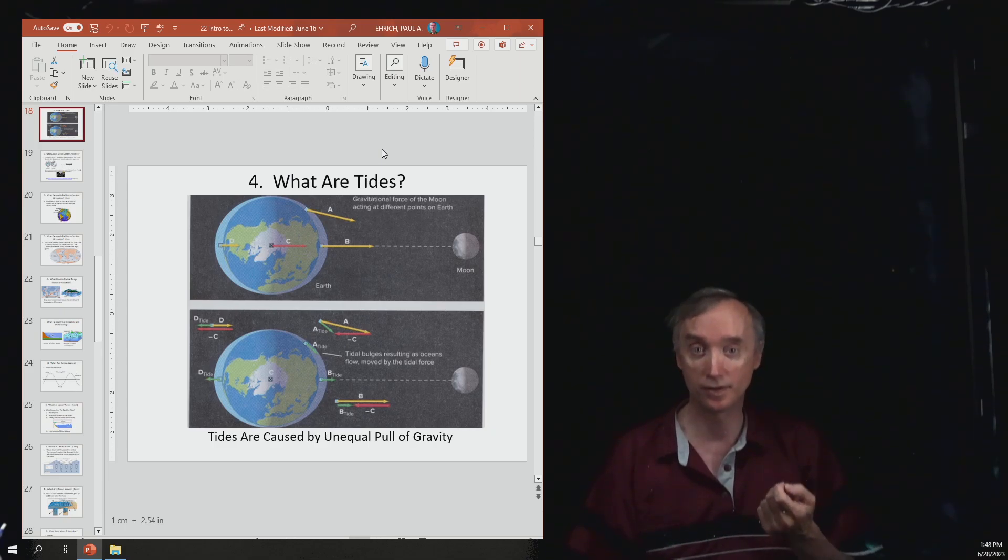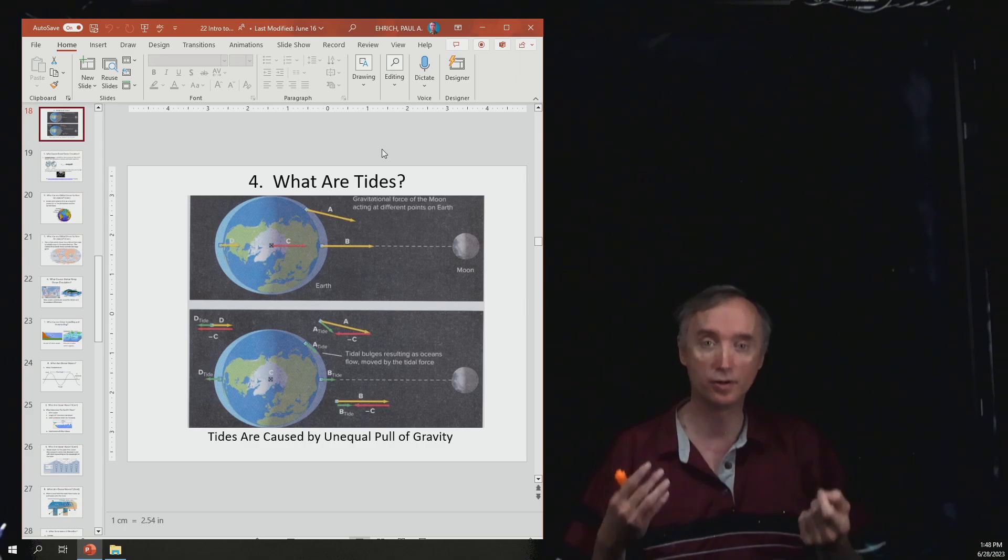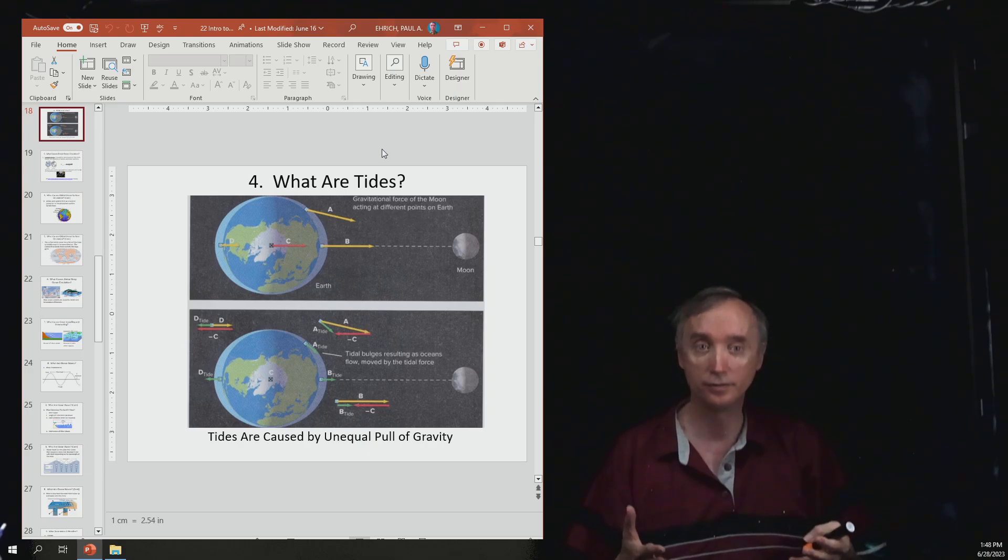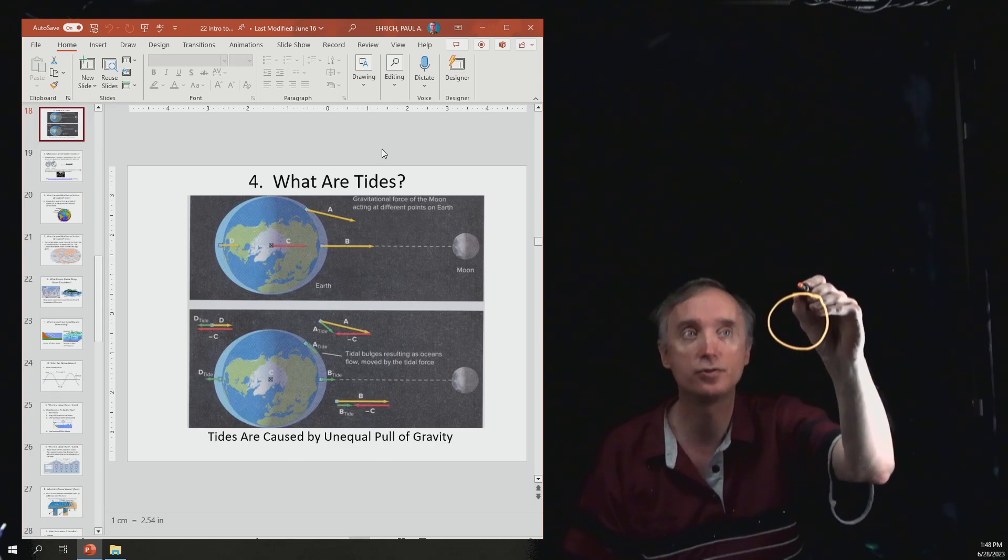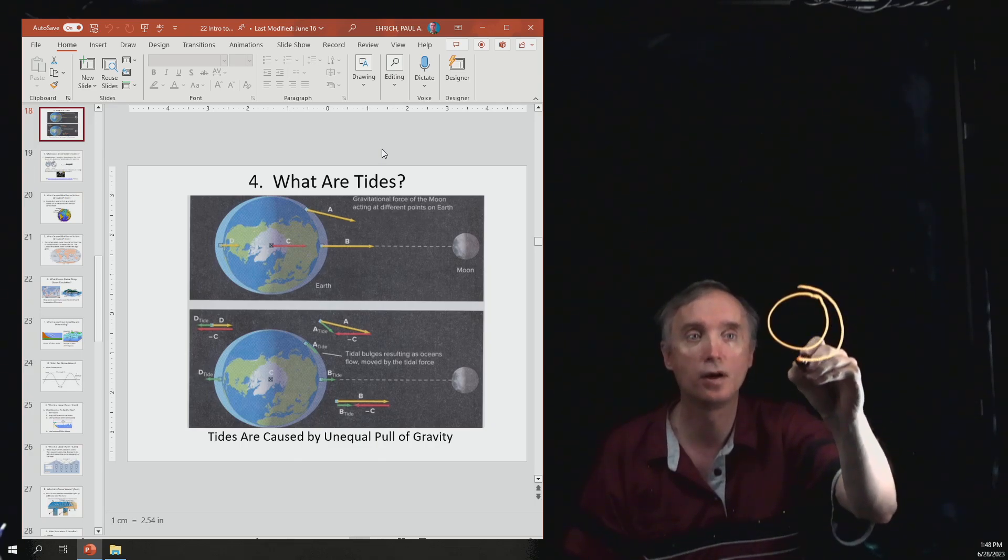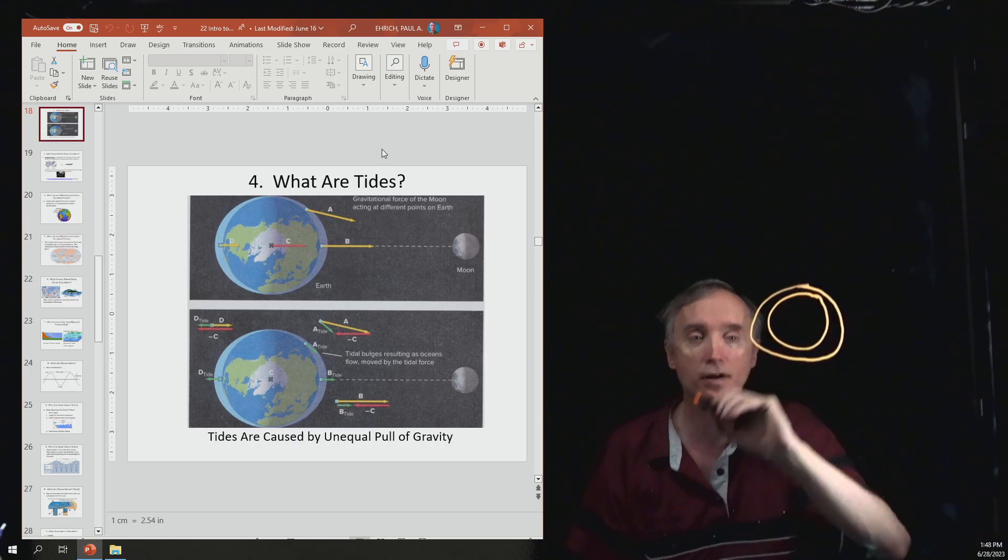So the first mechanism is going to be the tides. What do I want you to know about the tides? It's caused by the gravity of the moon pulling unequally on the earth. So that if I was to ask you to draw the tides, you should be able to make a bulge on both sides of the earth.